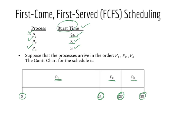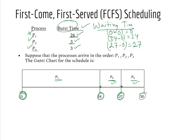This is the Gantt chart showing the execution order. Now let's calculate waiting time. P1's arrival time is 0 and it starts at 0, so waiting time is 0. P2 starts at 24 and arrived at 0, so waiting time is 24. P3 starts at 27 and arrived at 0, so waiting time is 27.